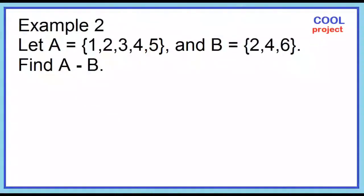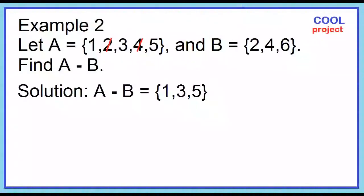Example number 2: Given set A and set B, find A minus B. A minus B contains the elements 1, 3, and 5.